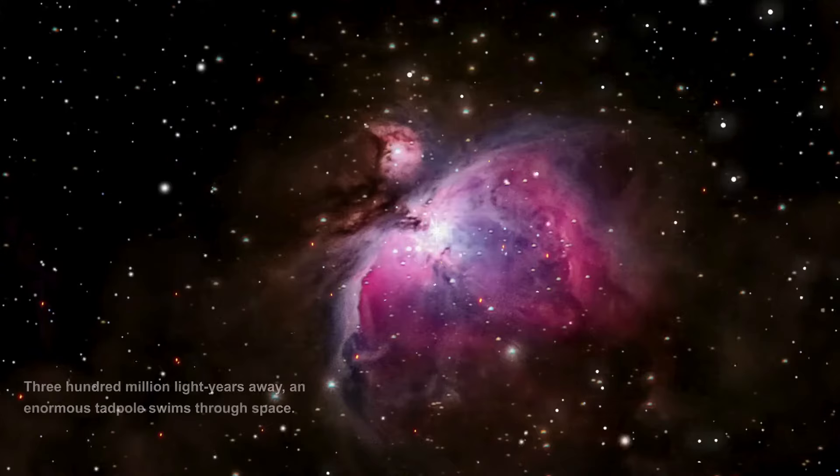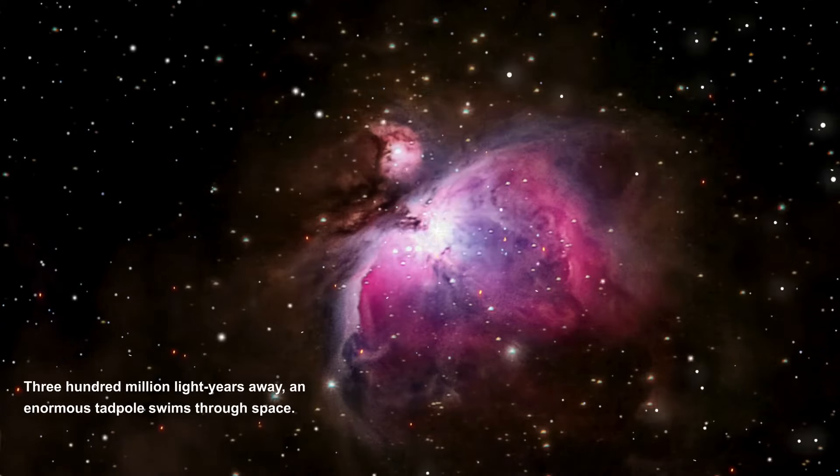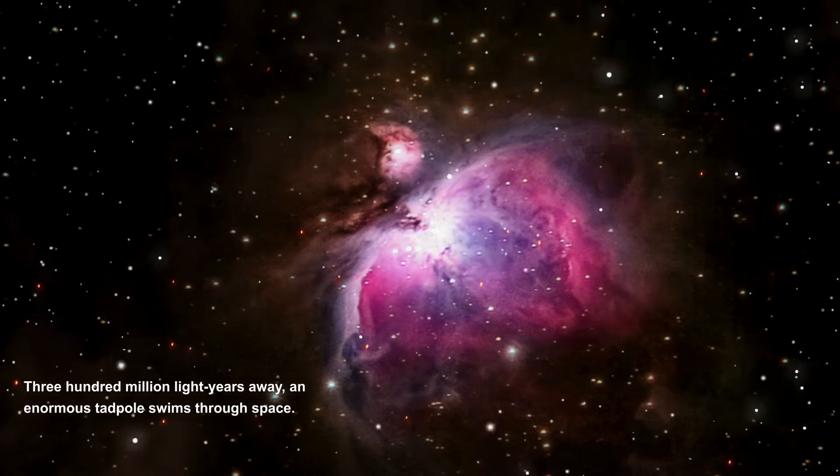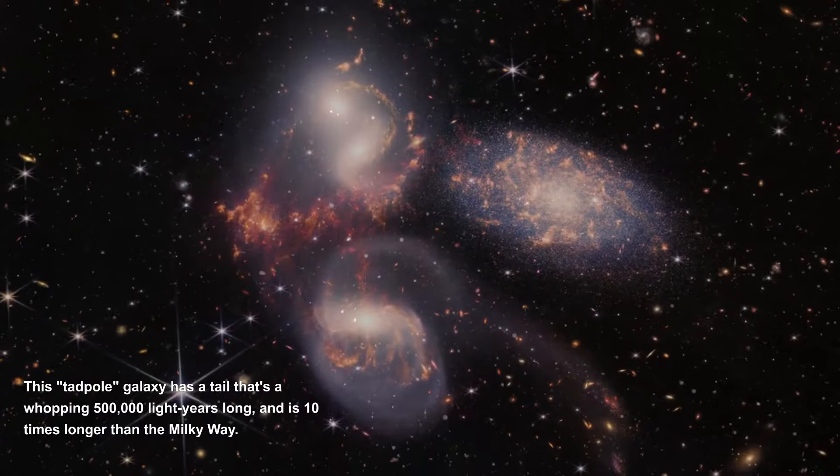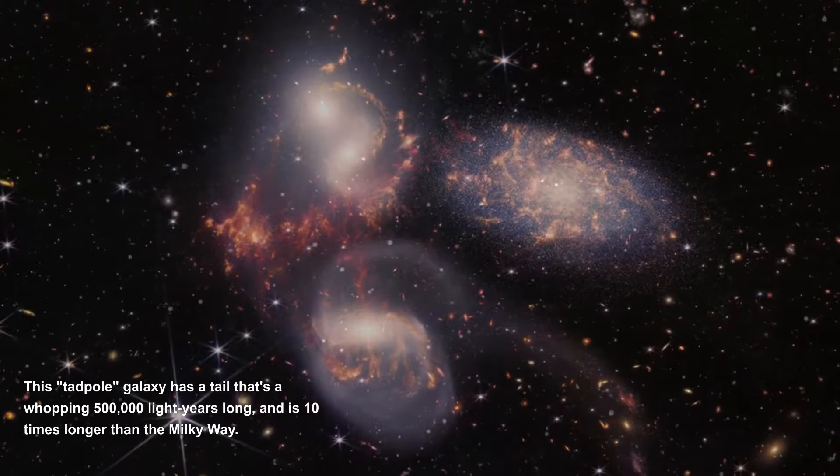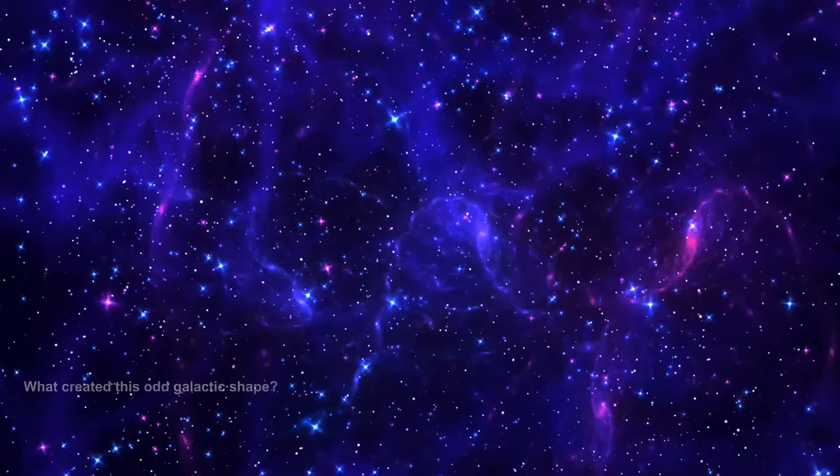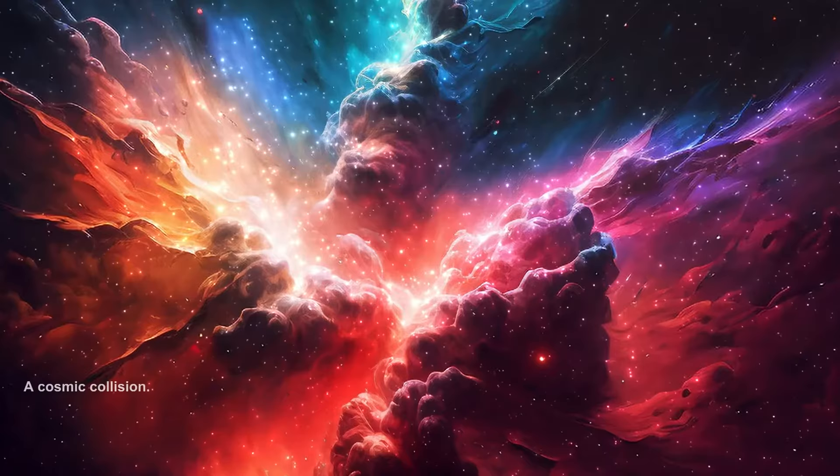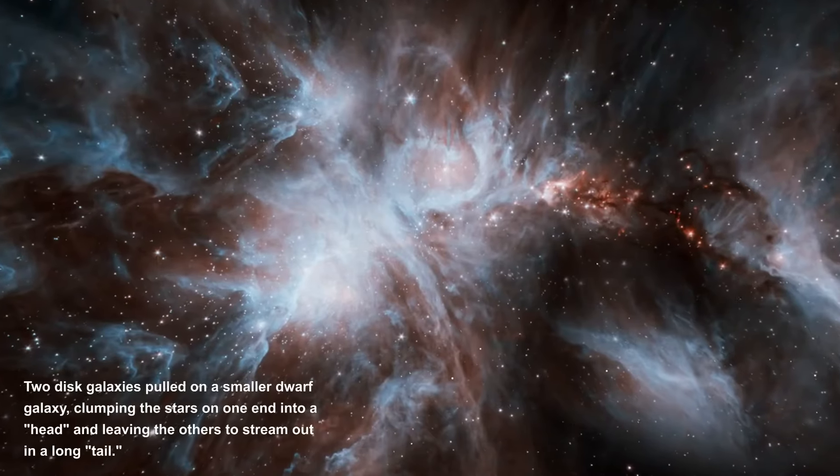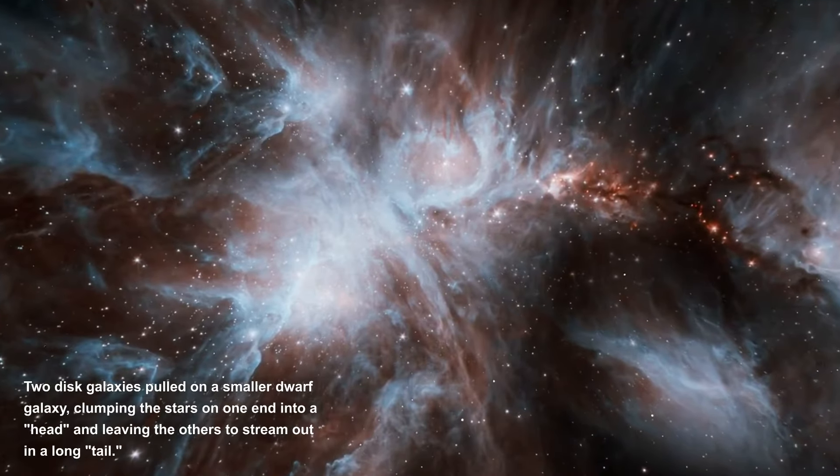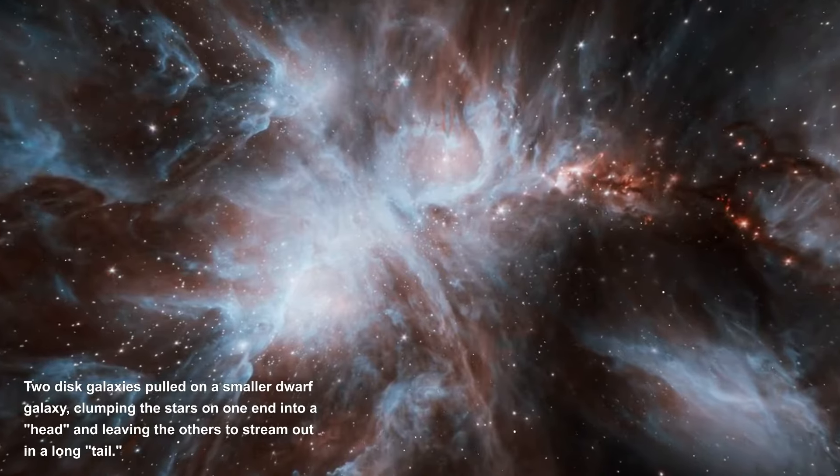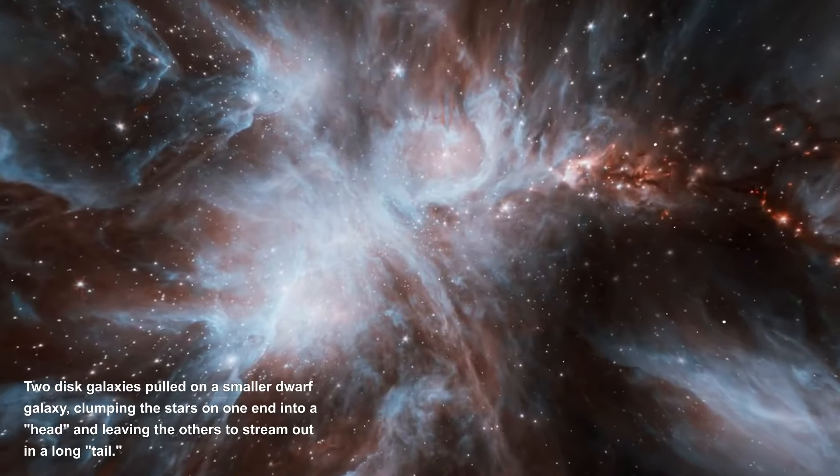Tadpole swims through space. 300 million light-years away, an enormous tadpole swims through space. This tadpole galaxy has a tail that's a whopping 500,000 light-years long and is 10 times longer than the Milky Way. What created this odd galactic shape? A cosmic collision. Two disc galaxies pulled on a smaller dwarf galaxy, clumping the stars on one end into a head and leaving the others to stream out in a long tail.